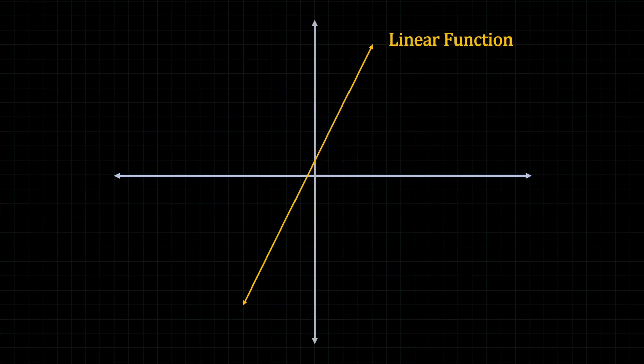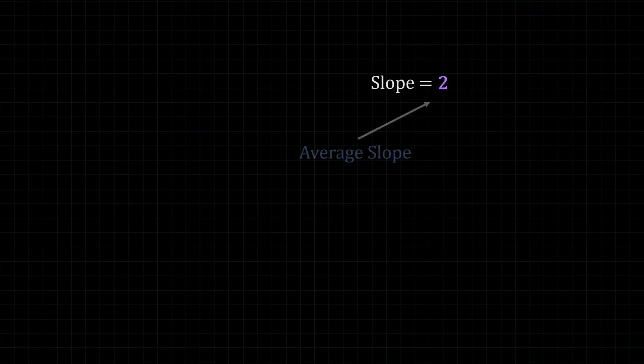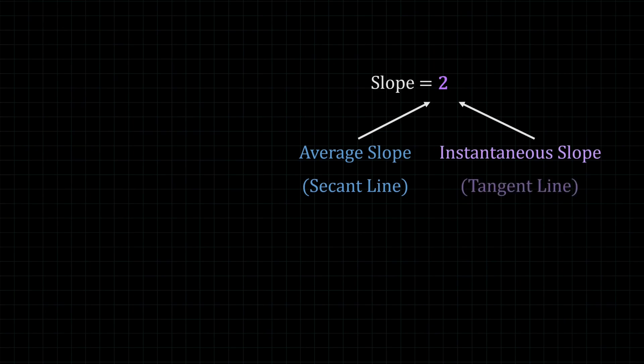So for a linear function like y equals 2x plus 1 in the form y equals mx plus b, the m — which is the slope — is 2. That slope represents both the average slope, which is the slope of the secant lines, as well as the instantaneous slope, which is the slope of the tangent lines. Since calculus revolves around instantaneous changes, for linear functions we actually don't need calculus to find the instantaneous rate of change, because the slope of a linear function is the instantaneous rate of change at any point.